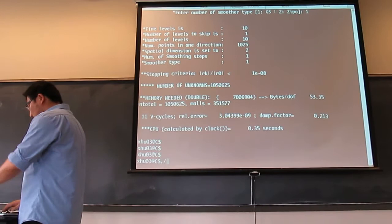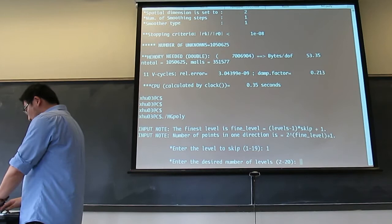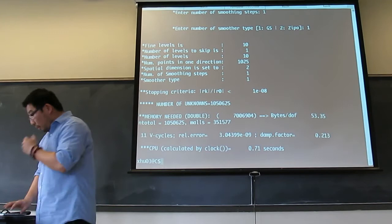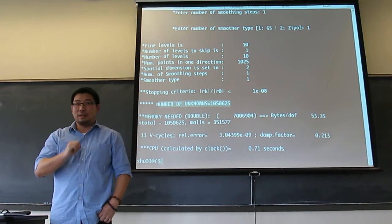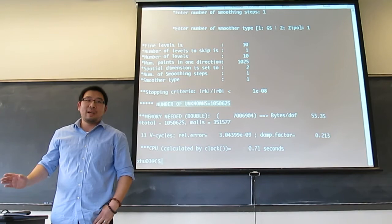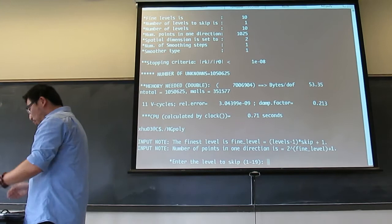Now let me use multigrid to solve the same problem. The level should be 10, dimension 2, constant 2. The total number of unknowns is basically one million — a little bit more. I can solve it in less than one second on my laptop.